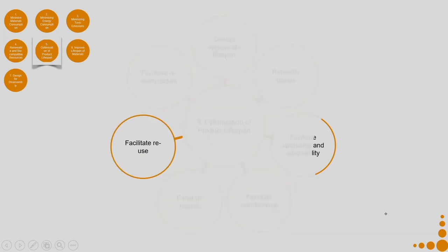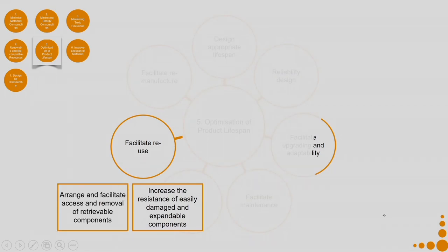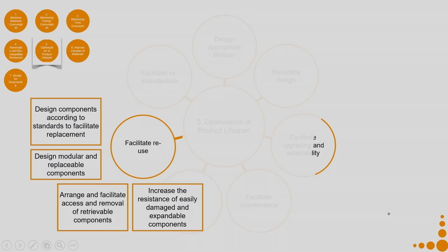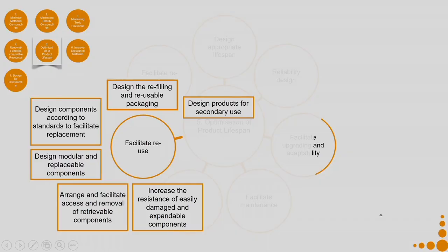Then coming to facilitate reuse: increase the resistance of easily damaged and expendable components. Arrange and facilitate access and removal of retrievable components. Design modular and replaceable components. Design components according to standards to facilitate replacement. Design refilling and reusable packaging — for example, with hand wash, you can buy it in a bottle and after the bottle is finished, buy refill pouches. Design prototypes for secondary use.